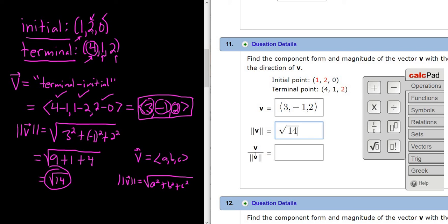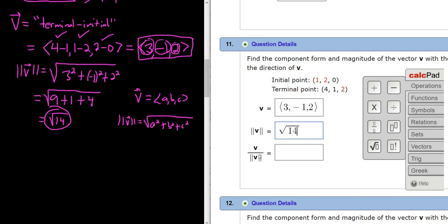The last piece wants us to work this out. It's kind of a nice problem because it tells you how to do it. It tells you how to find the unit vector. It gives you the formula. So it would be v over the magnitude of v. And you're basically taking this vector and dividing by this. So basically you're multiplying by 1 over the square root of 14. And then you have <3, negative 1, 2>. Now I don't know if it will accept it like this. It might.